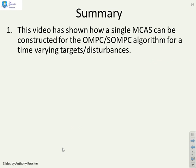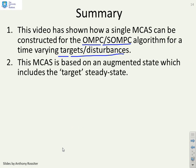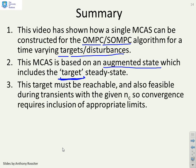So in summary, this video has shown how a single MCAS can be constructed for the OMPC SOMPC algorithm for time varying targets and disturbances. And that's the key thing. I've used an admissible set algorithm even though I've got time varying targets and disturbances. And the way we've done this is we've essentially used an augmented state which includes the target or this R minus D term as an additional state in our autonomous model. However, in order for the code to work, the target must be reachable or feasible during transients and in steady state with a given choice of NC.